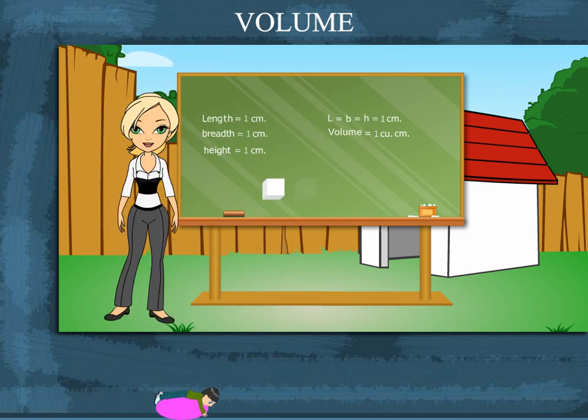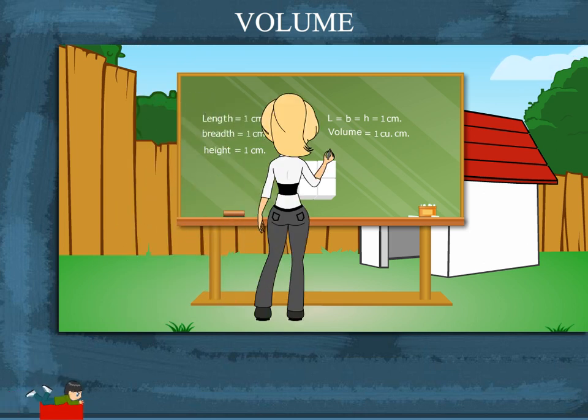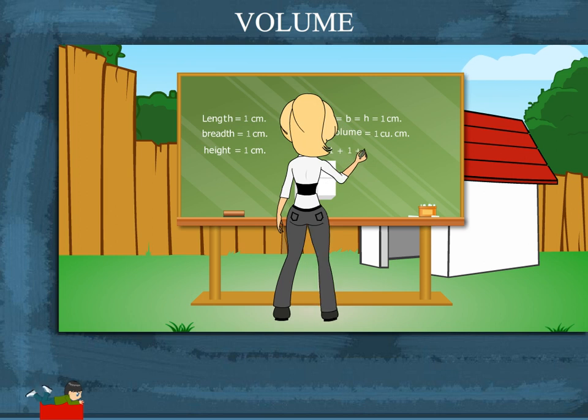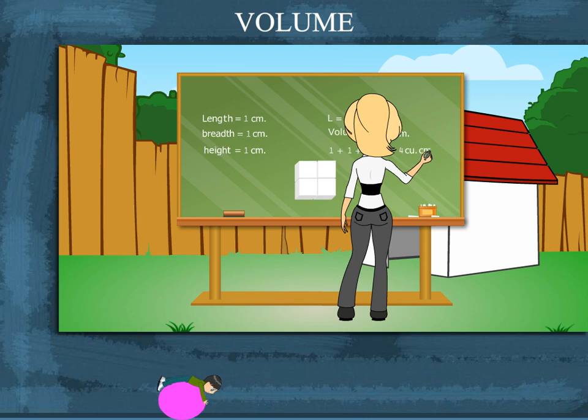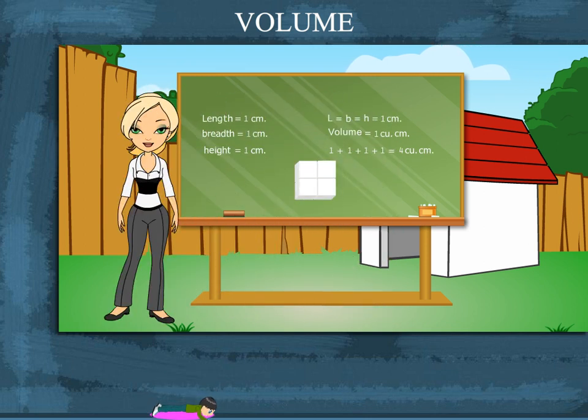She now has 4 cubes of equal size on the board. The volume of this big cube is 1 plus 1 plus 1 plus 1, which equals 4 cubic centimeter.